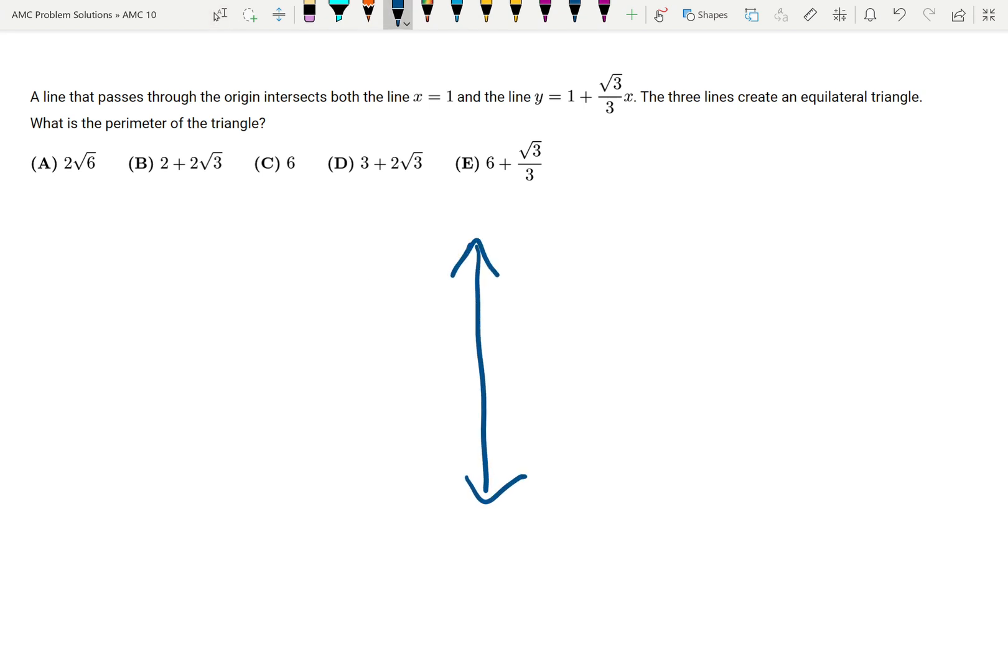I'm first going to draw what this looks like. So we have the line x equals 1 right here, and then we have the line y equals 1 plus root 3 over 3x. So this third line is going to pass through the origin and through both of these lines, so it's going to look something like this—that's line L.